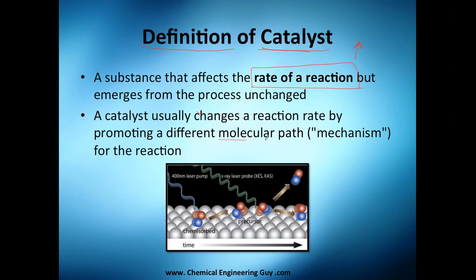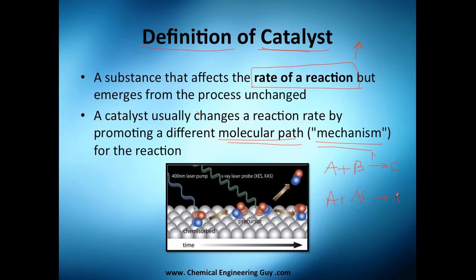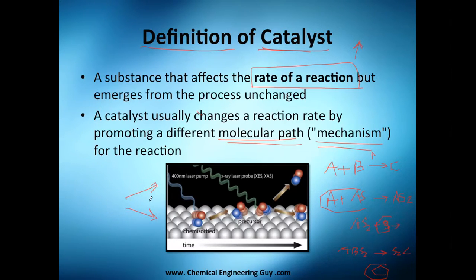We're going to see that later, but it's a mechanism we've seen before. Essentially, instead of going directly from A and B to C at high energy, you go and form AS, then AS goes and forms AS2, then AS2 gets B, and then ABS2 forms S2C which is C, and then it dissolves. So you eventually produce C from A and B through different intermediate paths.